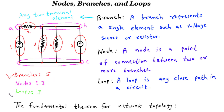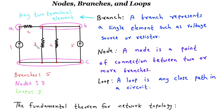Now let's discuss loops. A loop in a circuit refers to any closed path or circuit that starts and ends at the same node, without passing through any node more than once. In other words, it's a closed pathway that electricity can flow through.